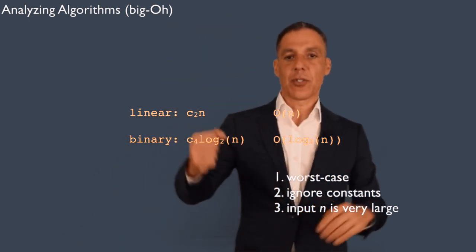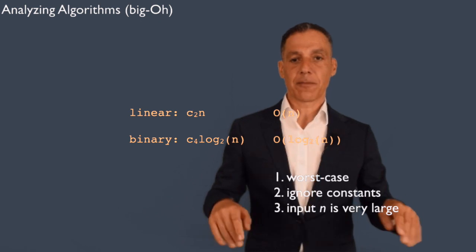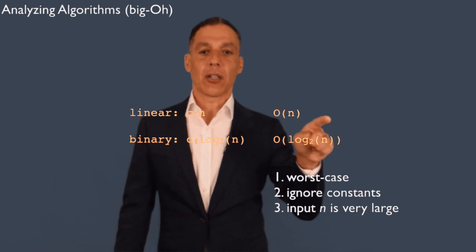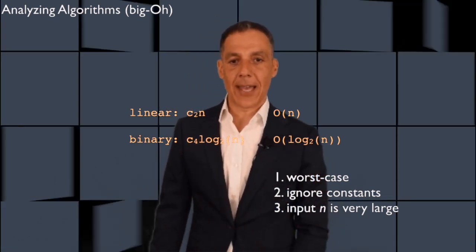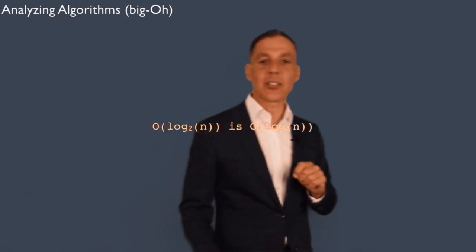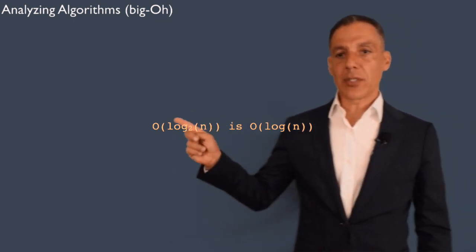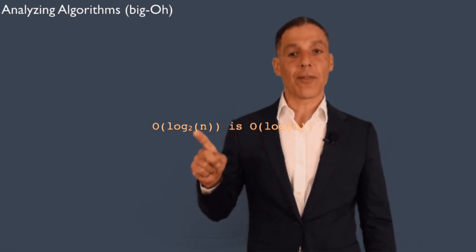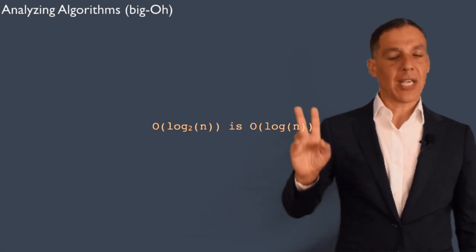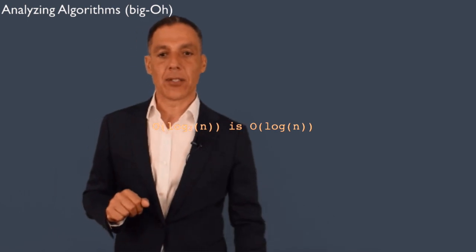Big O simply tells you this is the worst case analysis when the input gets very large. So linear search is big O of n, and binary search is big O of log base 2 of n. I'm going to argue that big O of log base 2 of n is the same as just big O of log n, regardless of what base it is — base 10, base 20, base 15 — I don't care, so I just leave the base off.